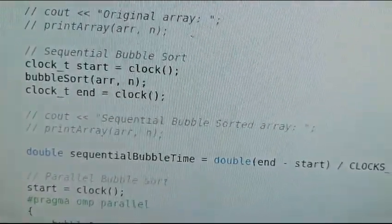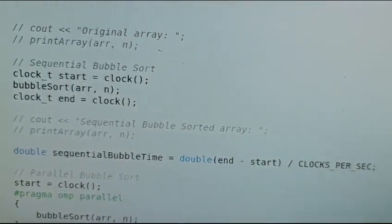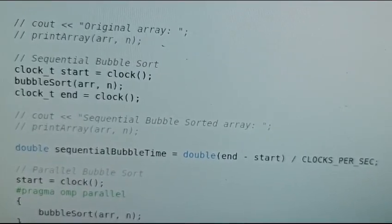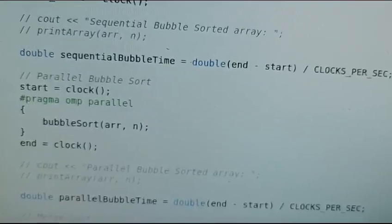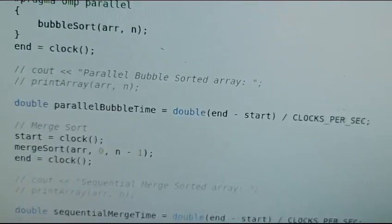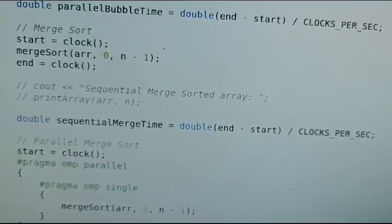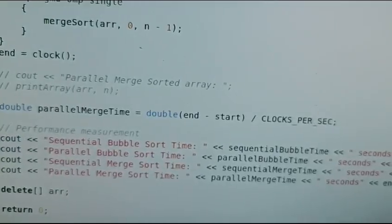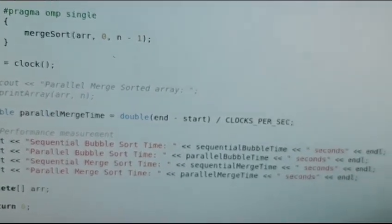The merge sort function is then recursively called on the left and right halves of the sub arrays into separate parallel sections. The merge function is then called to merge the sorted halves of the sub array. In the main function, merge sort is called with the start and end for the sequential and the parallel function, printing all values using cout statements.